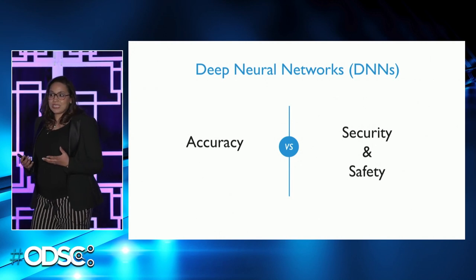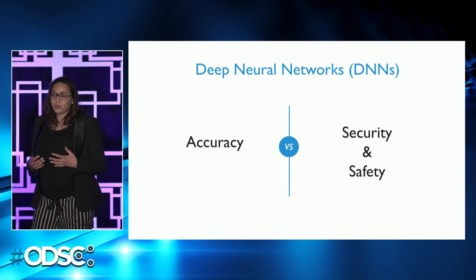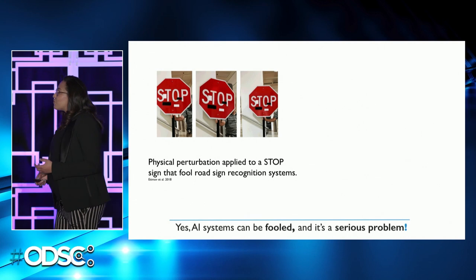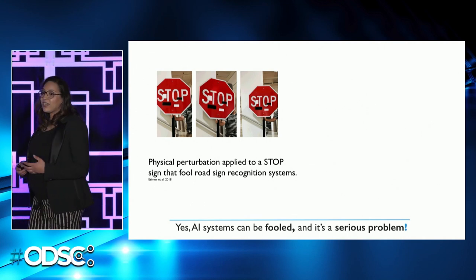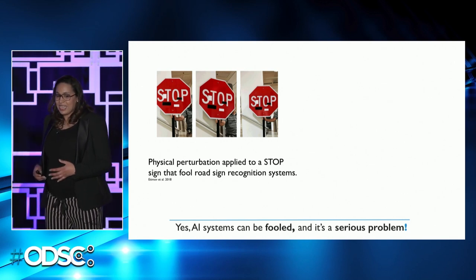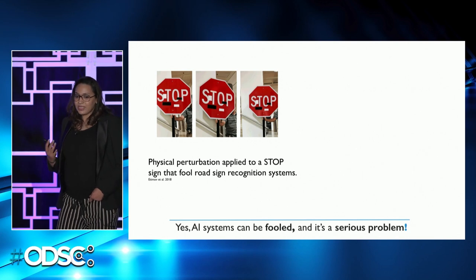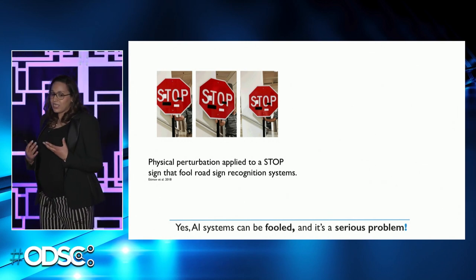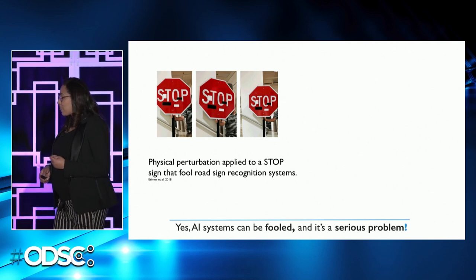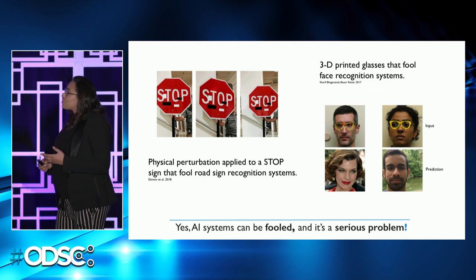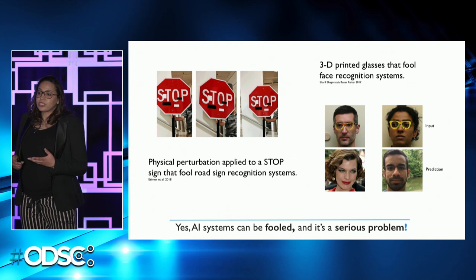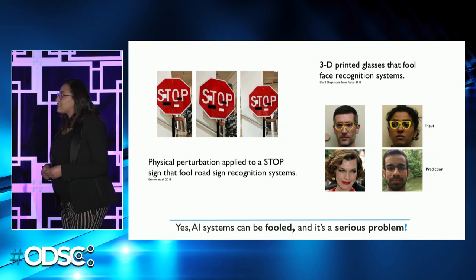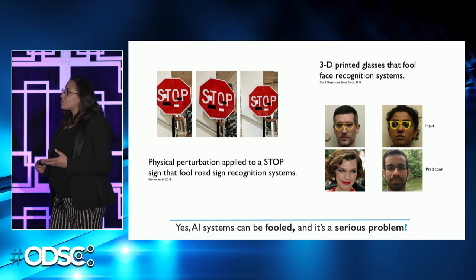Maybe we all want to own self-driving cars, but we all want our self-driving cars to make no mistakes when it comes to recognizing road signs. What if I tell you that it is possible to fool a self-driving car into thinking that a stop sign is a high-speed limit sign, even with high confidence from different angles and distances, by adding a few stickers in a very specific way? Did you know that it is also possible to use 3D printed glasses that can fool face recognition systems into recognizing a man as a female or a female as a male? These are called adversarial attacks.